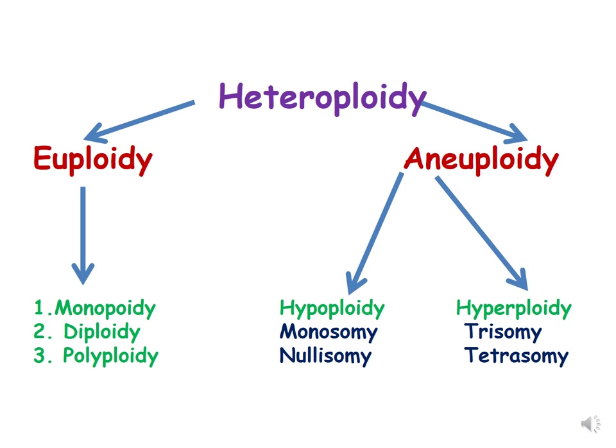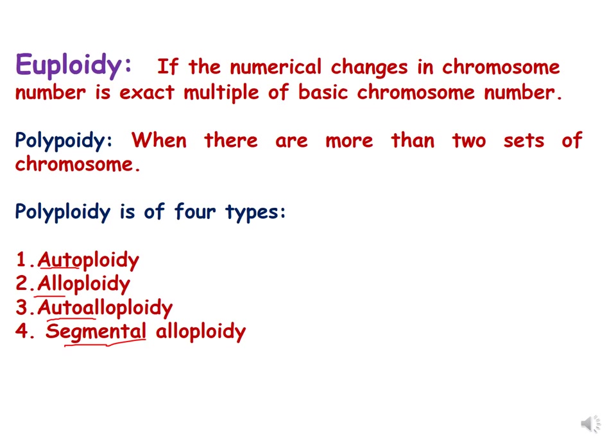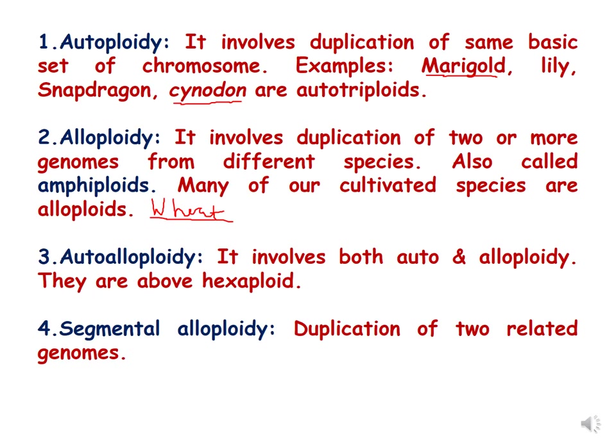In the previous two lectures we have already discussed what aneuploidy is and its examples. Now, what are the types of polyploidy? Polyploidy is when there are more than two sets of chromosomes and polyploidy is of four types: autoploids, alloploids, autoalloploids, and segmental alloploids.